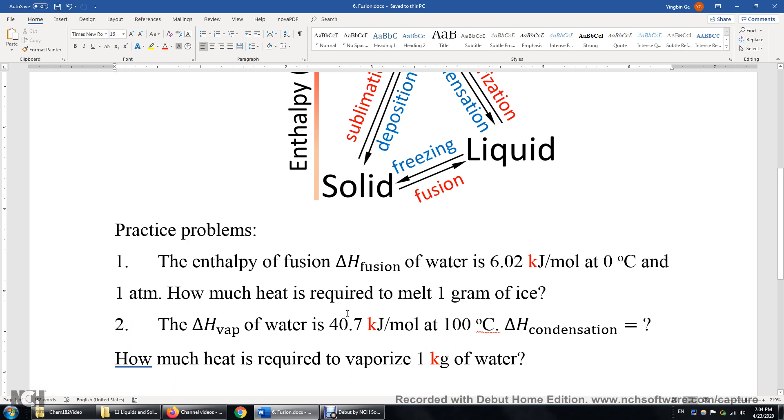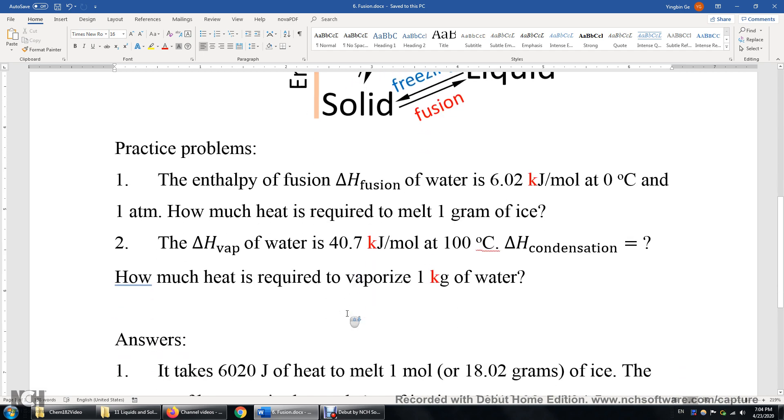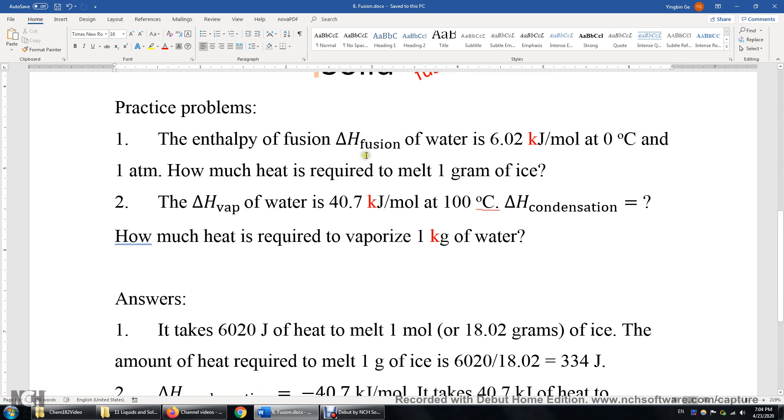Now you may pause the video here and then I'll talk about the answers. Question 1. Because the enthalpy of fusion is 6.02 kJ per mole, we know it takes 6,020 joules to melt one mole or 18.02 grams of ice. You can use 18 grams as well. Therefore, the amount of heat required to melt one gram of ice is this number for 18 grams divided by the number of grams. We only need 334 joules of heat to melt one gram of ice.